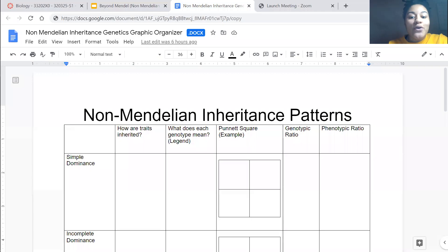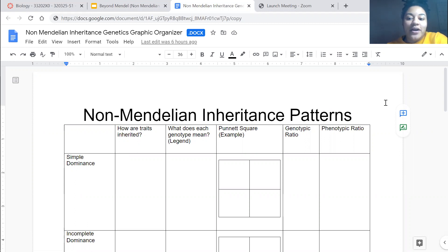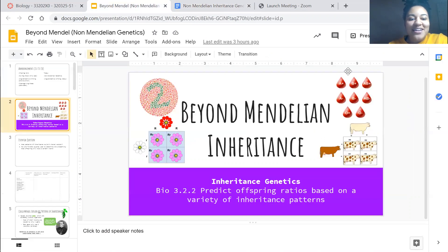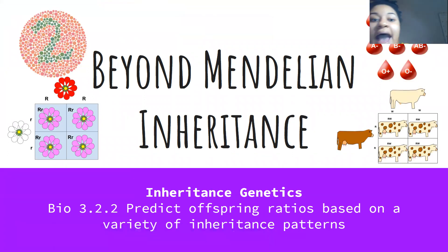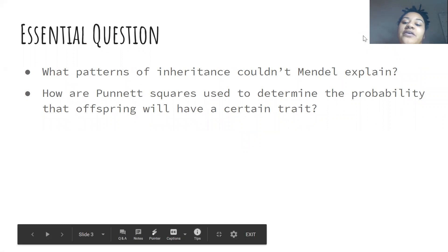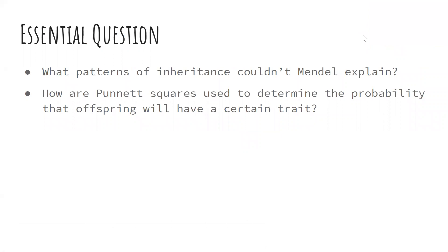Hi, everyone. This is a pre-recorded session in which you can use the graphic organizer — which I'm about to share my screen of — to work through some non-Mendelian inheritance patterns with me. I'm going to go through the lecture today, teach you how to do each one, and fill in the graphic organizer with you. In this lesson, we're going to talk about the patterns of inheritance that Mendel couldn't necessarily explain and how we use Punnett squares to still determine the probability of offspring from parent crosses.